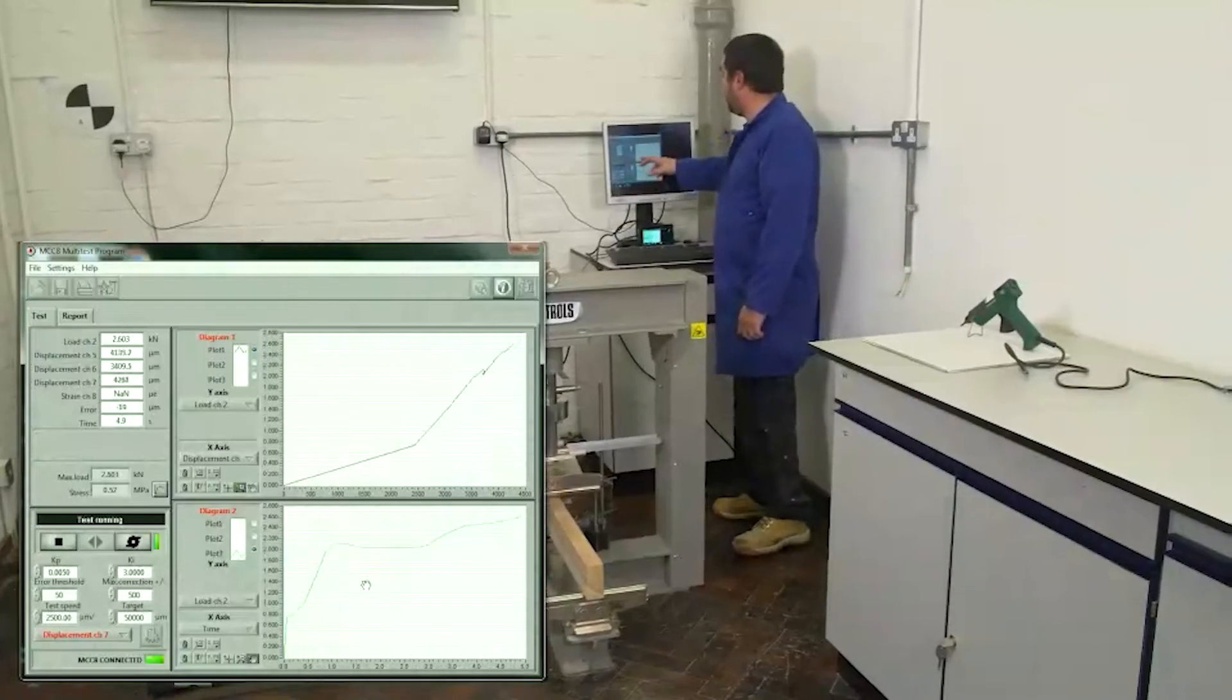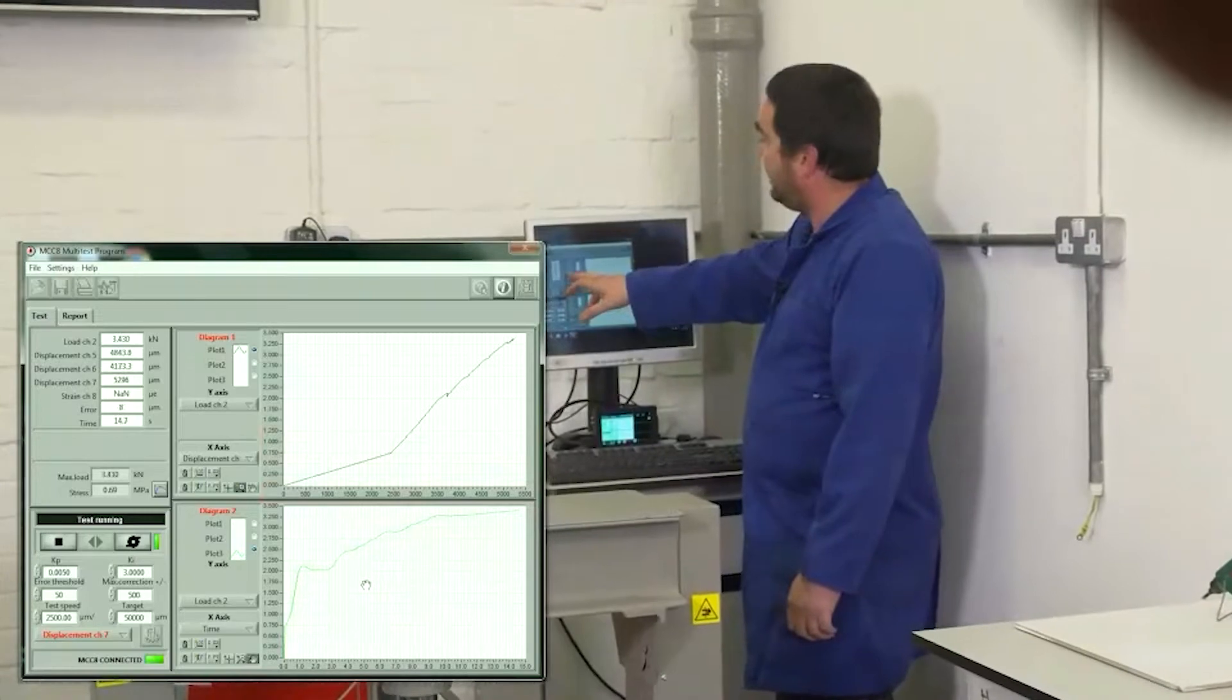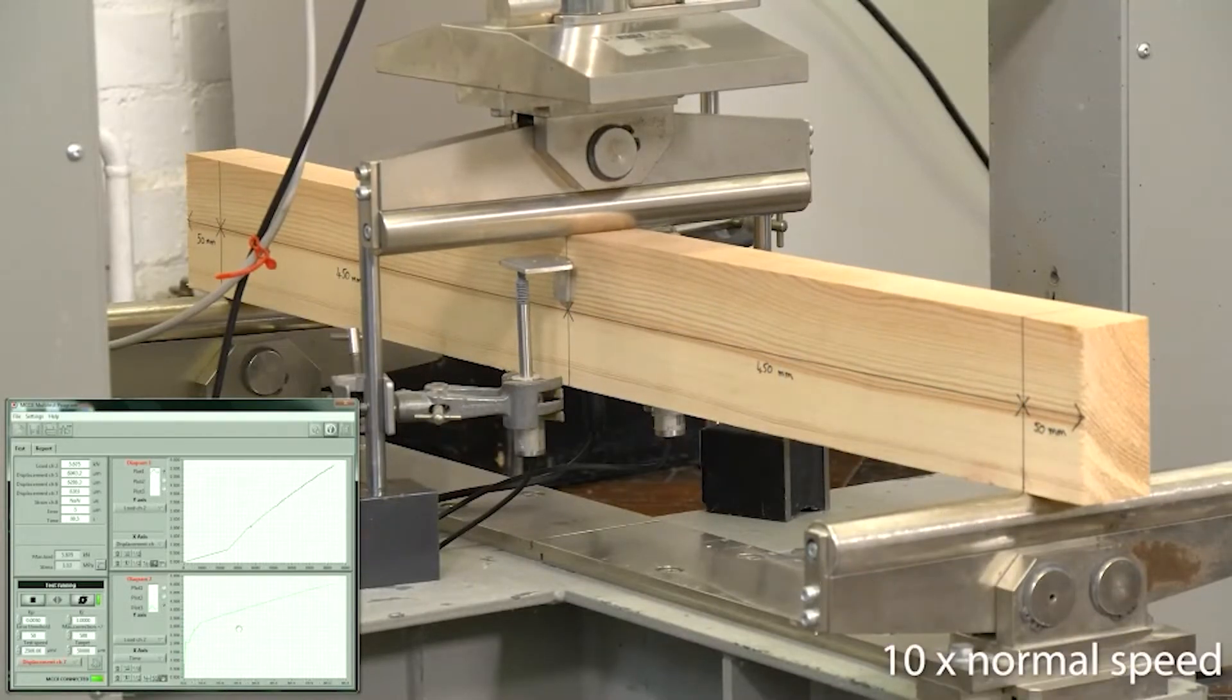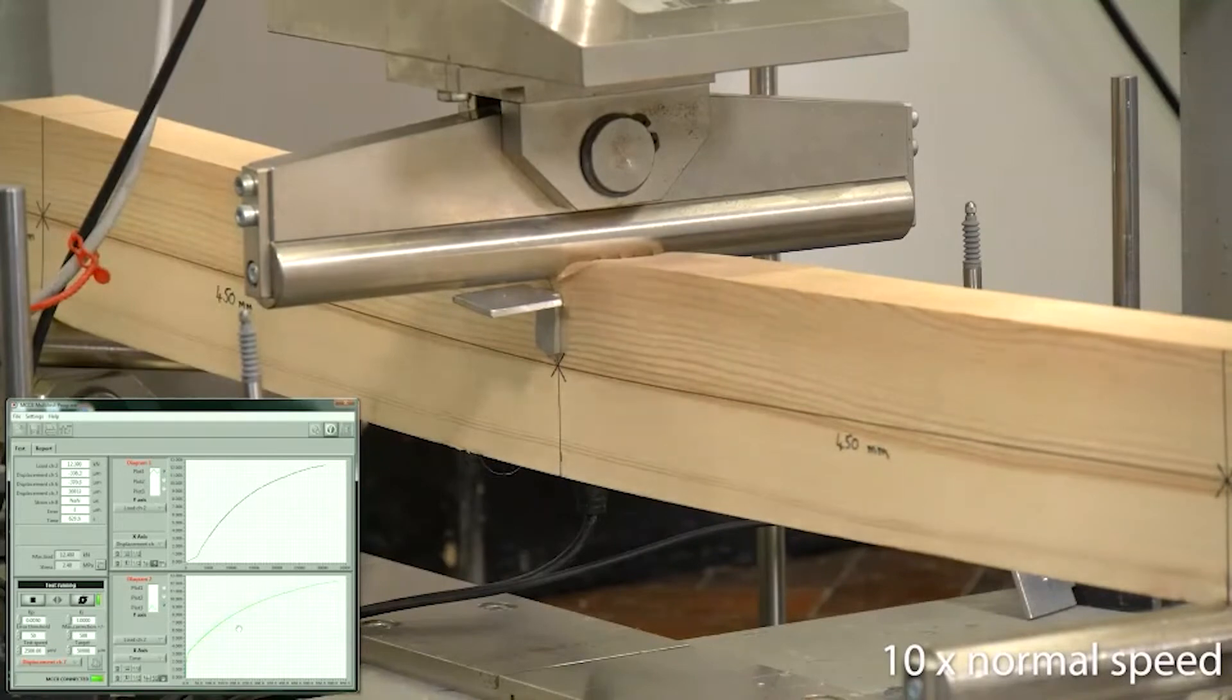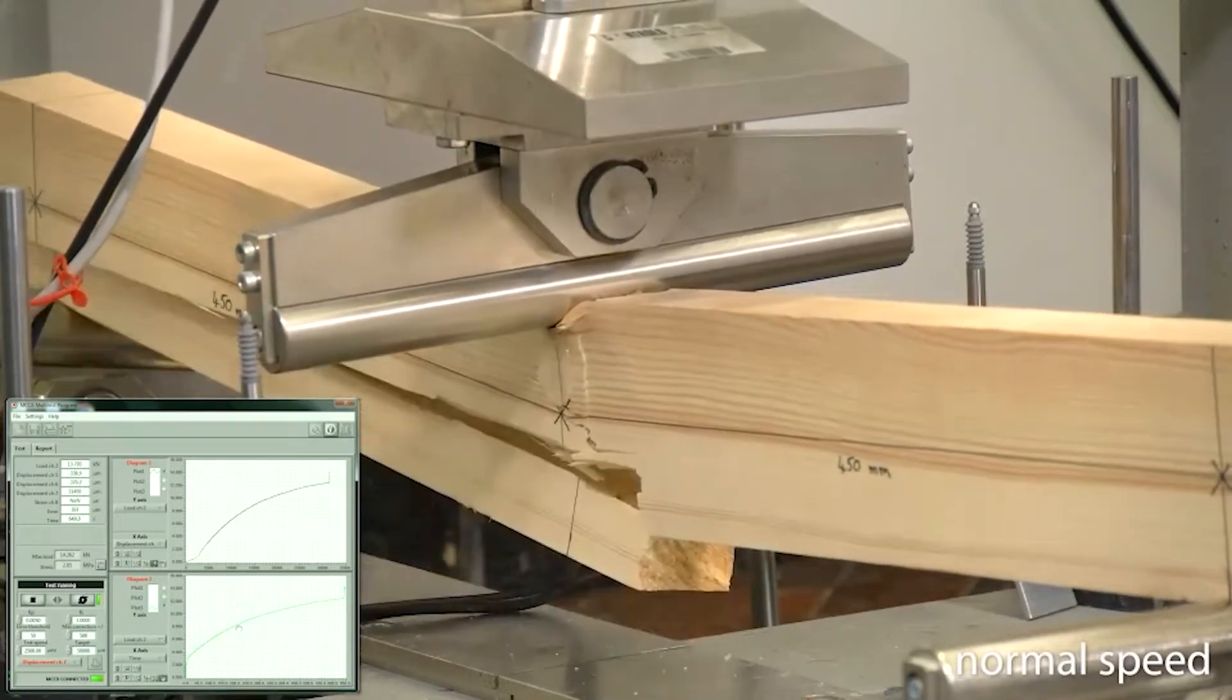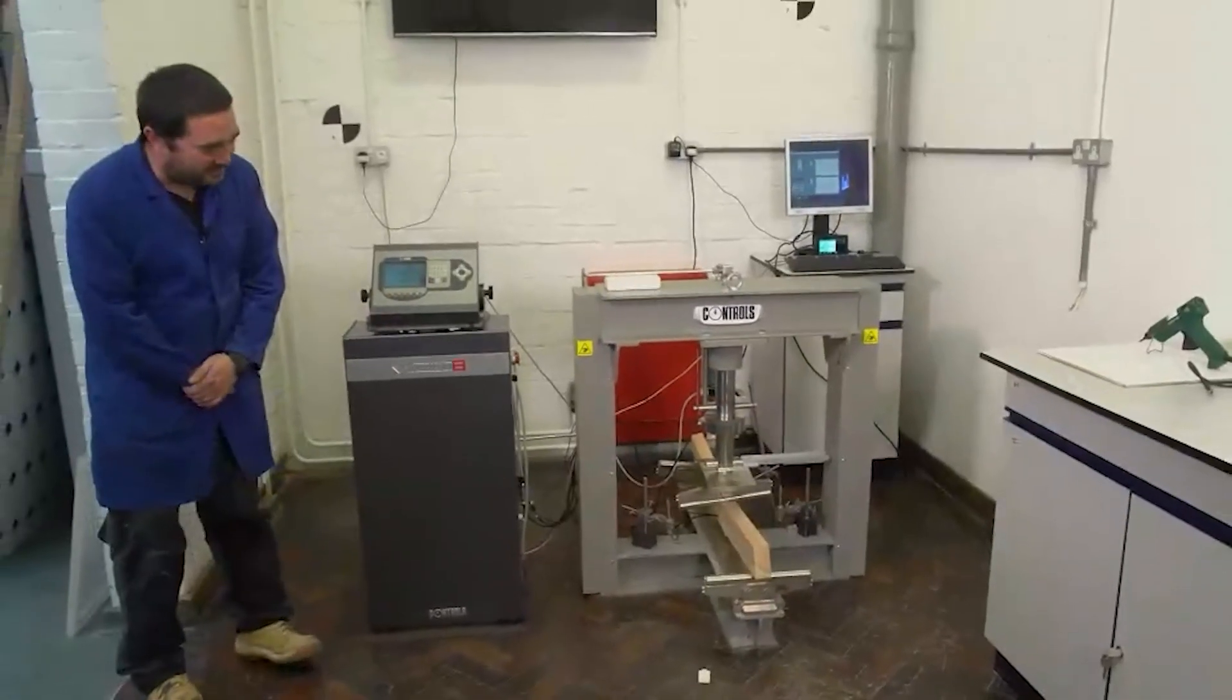So just explaining a little bit about the graph. It's this top graph here. And we've got load versus displacement. So the third LVDT, which is LVDT channel seven, and load is on channel two. And there's a really rather satisfying failure.